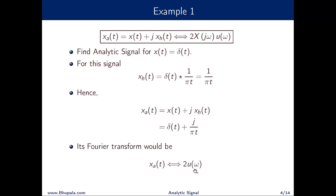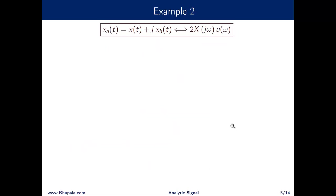In the frequency domain, the analytic signal of δ(t) equals 2·u(ω). This follows because the Fourier transform of the analytic signal is 2·X(jω)·u(ω), and since X(jω) = 1 for the delta function, we get 2·u(ω).